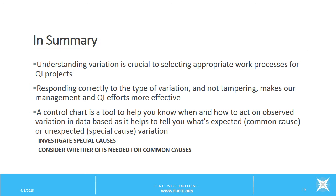A control chart is a tool to help you know when and how to act on observed variation in data, as it helps to tell whether what you're seeing is common cause and unexpected cause or special cause variation. And again, what we do with these is investigate special cause and consider whether QI is needed for the common cause.